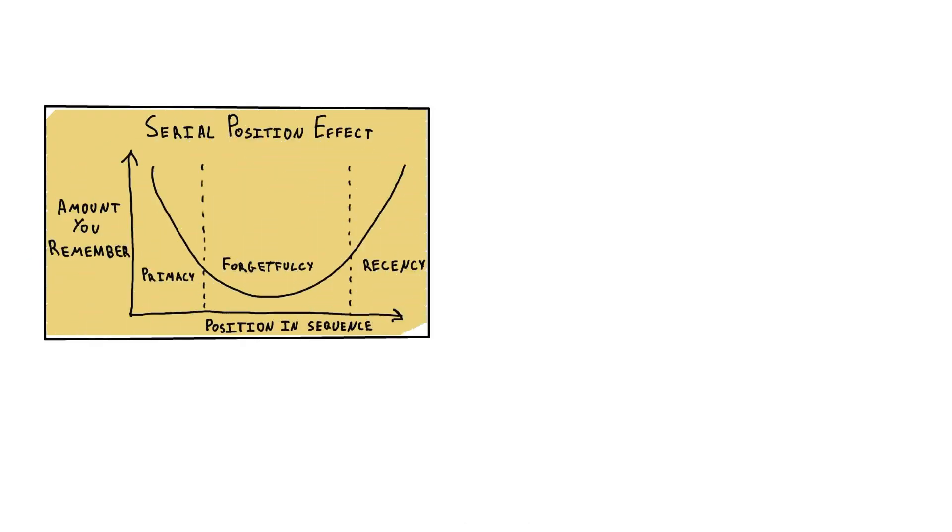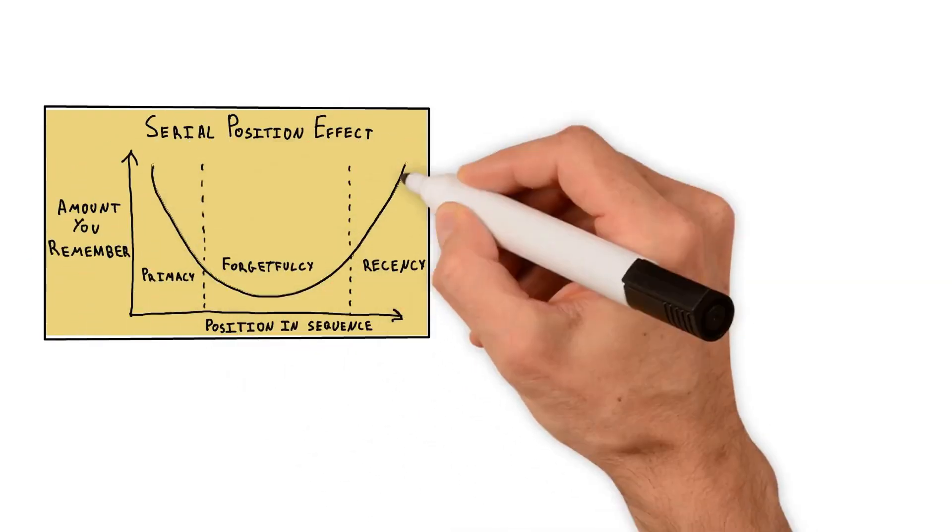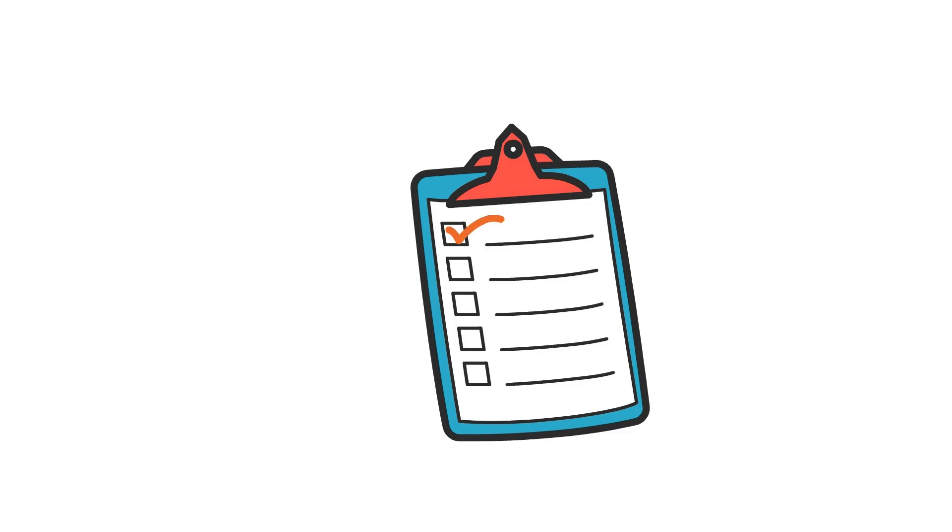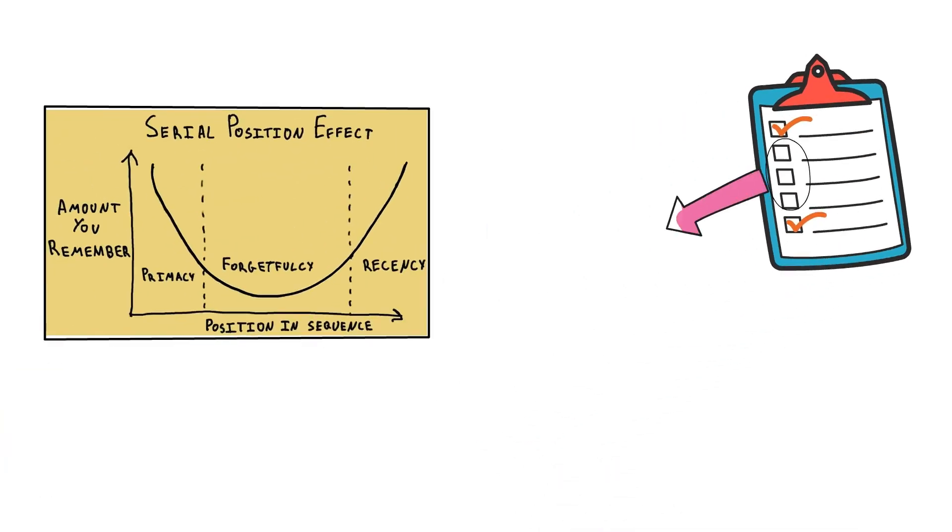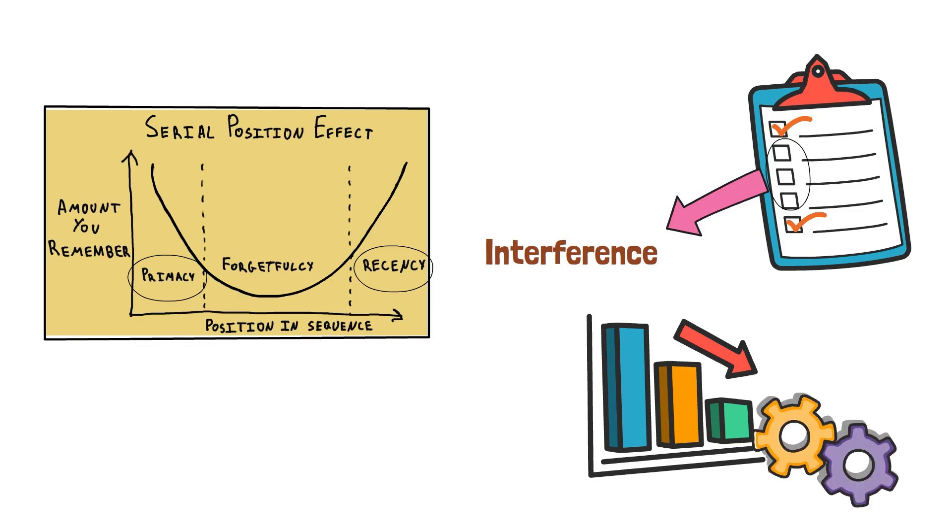The interaction between these two effects creates a U-shaped recall curve when plotted, with the first and last items in a list being more likely to be remembered than those in the middle. The middle items are often subjected to interference from both early and late items, reducing their chances of being retained.